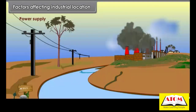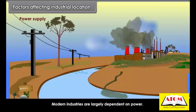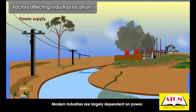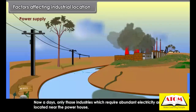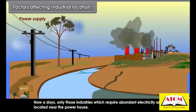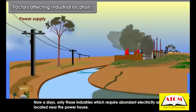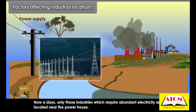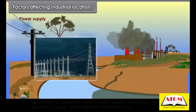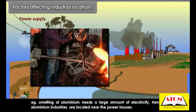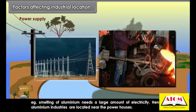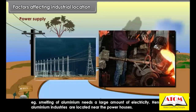Modern industries are largely dependent on power. Industries which require abundant electricity are located near powerhouses. For example, smelting of aluminum needs a large amount of electricity; hence, aluminum industries are located near the powerhouses.